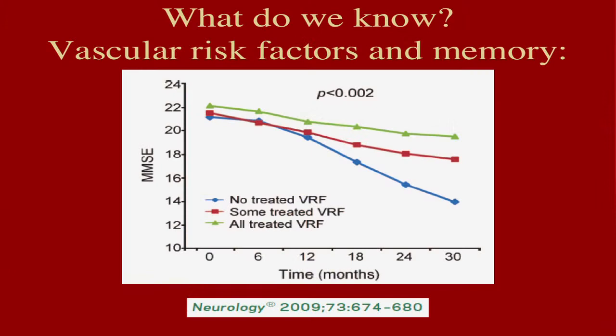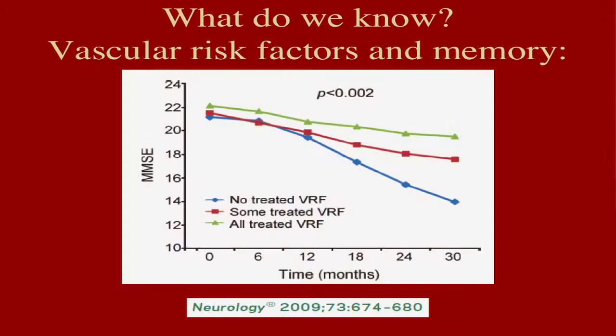This is one example from the medical literature looking at a group of people with early Alzheimer's disease. All the people in the study had some degree of vascular risk factors — high blood pressure, high cholesterol, smoking, and high blood sugar. The people who didn't have any of those things treated declined the fastest. The people who had some vascular risk factors treated were in the middle. And the people who had most of them treated remained much more stable. This is just one of many examples making the case that keeping the brain healthy in other respects can really change the outcome.